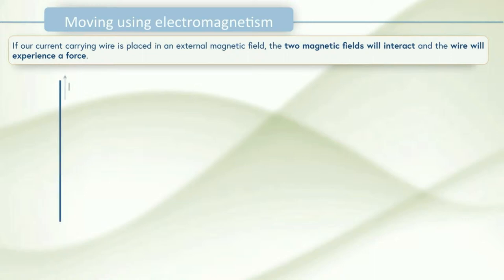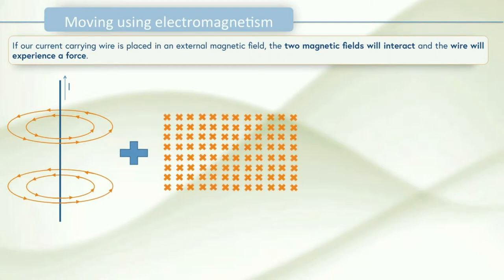So here's my current carrying wire and it generates its own magnetic field and concentric rings around it kind of like a tree trunk shape. We're going to then add this to an external magnetic field and this could be just two poles of a magnet which we then look at the force between.